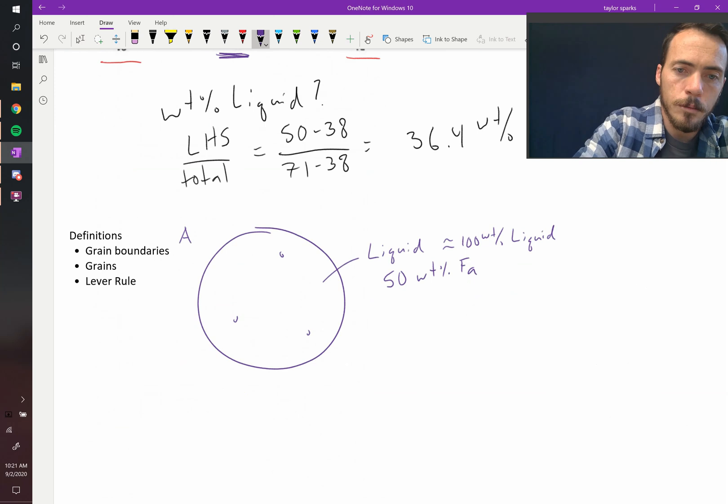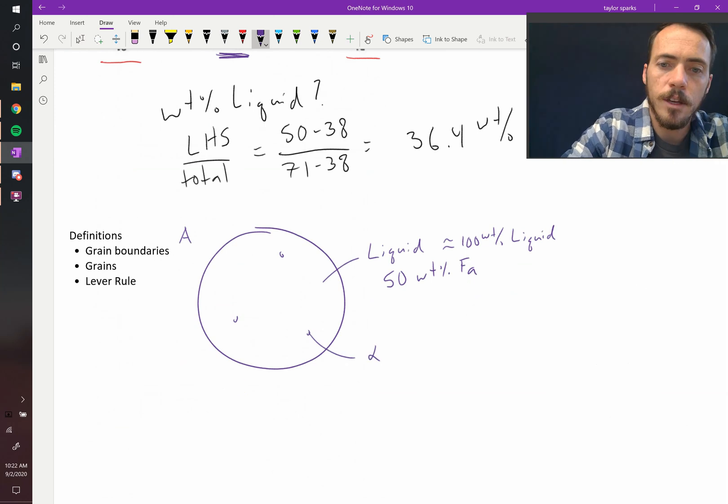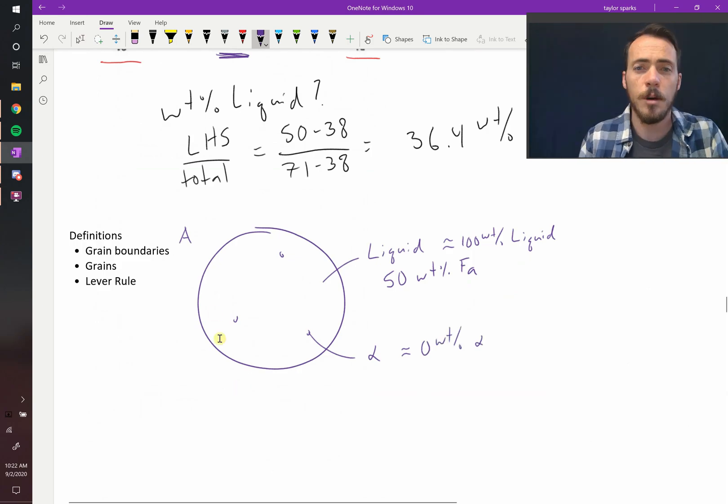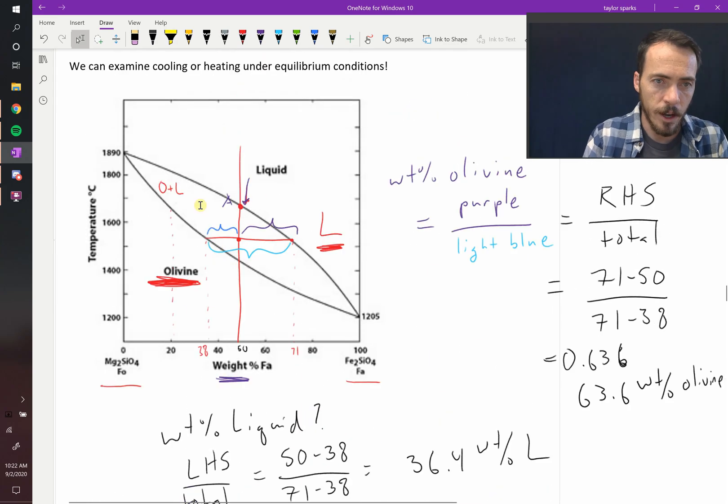Now the solid that forms, we'll call it just alpha, it's the olivine phase. It's essentially not there at all. Zero weight percent alpha. And its composition would be clear over here at, I think we called it 20 weight percent FA.